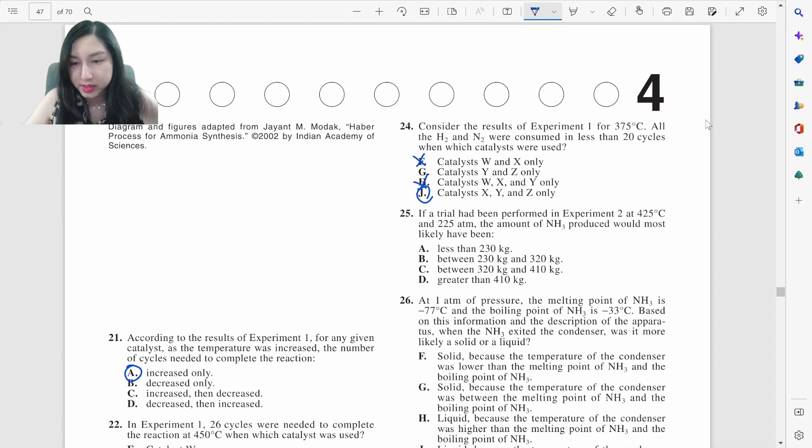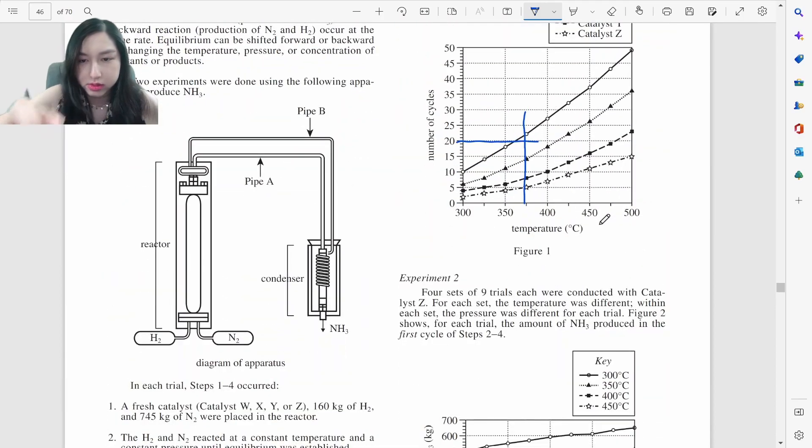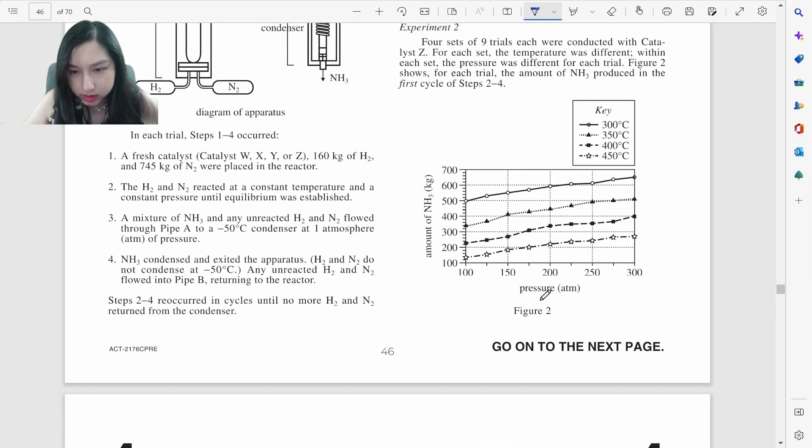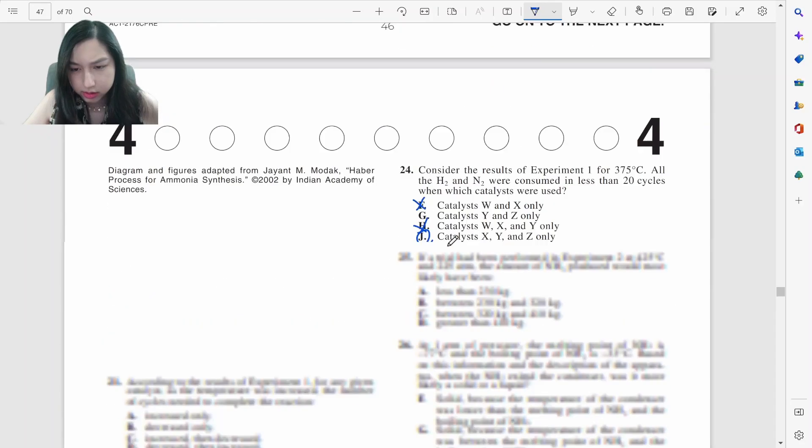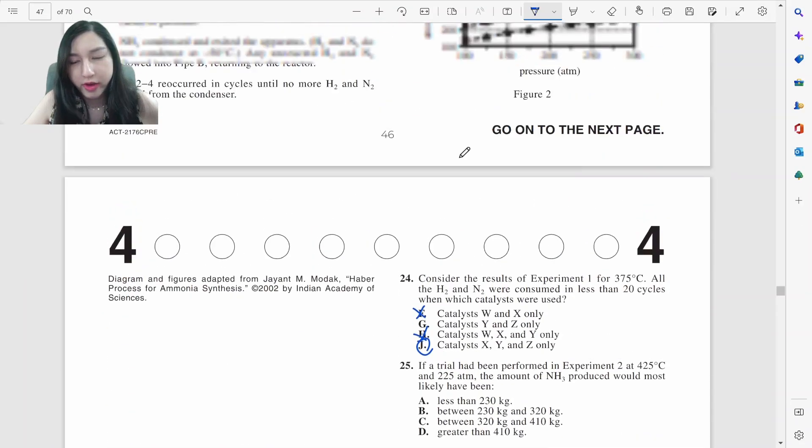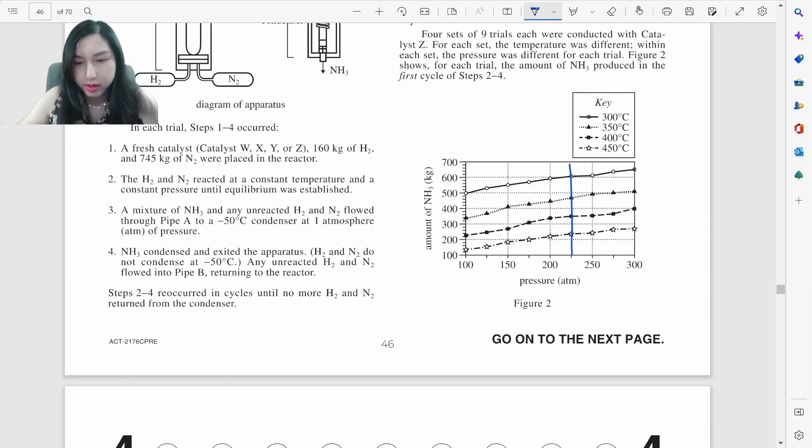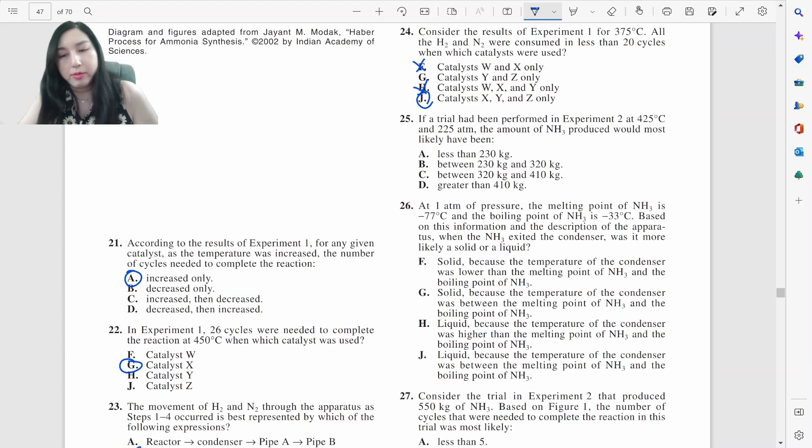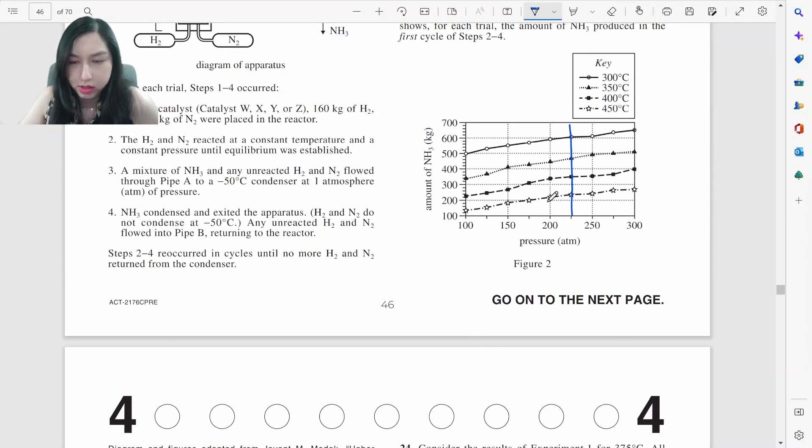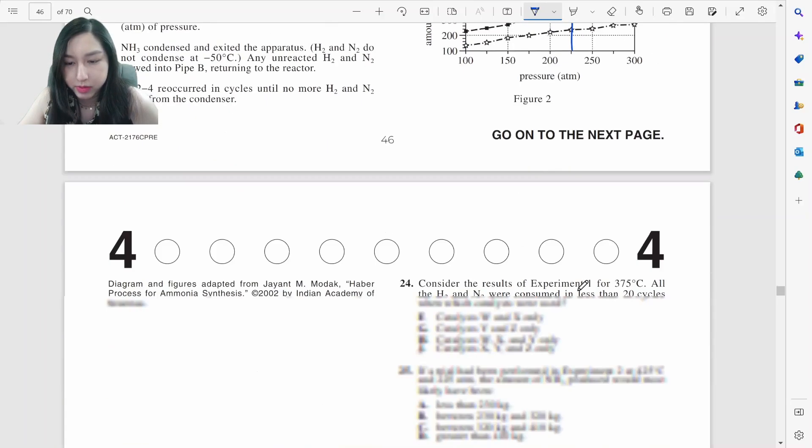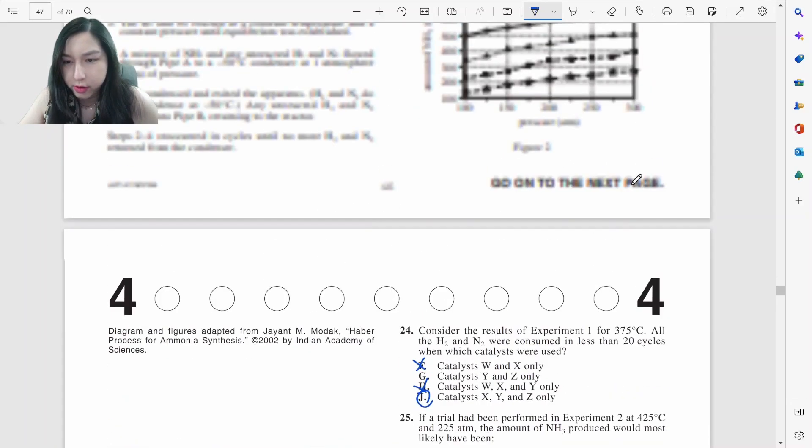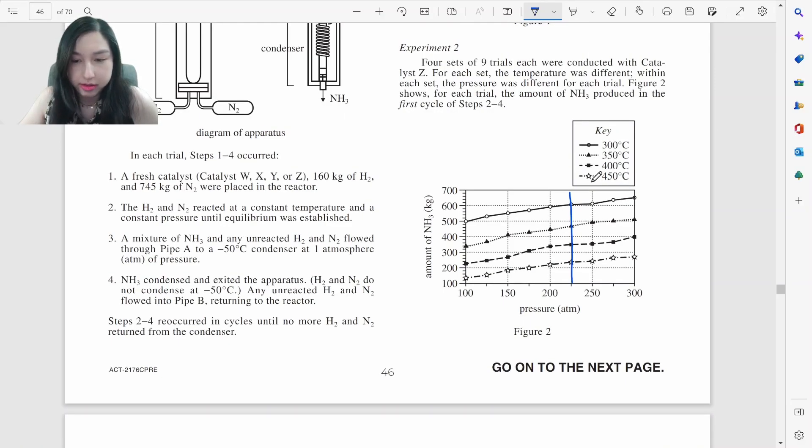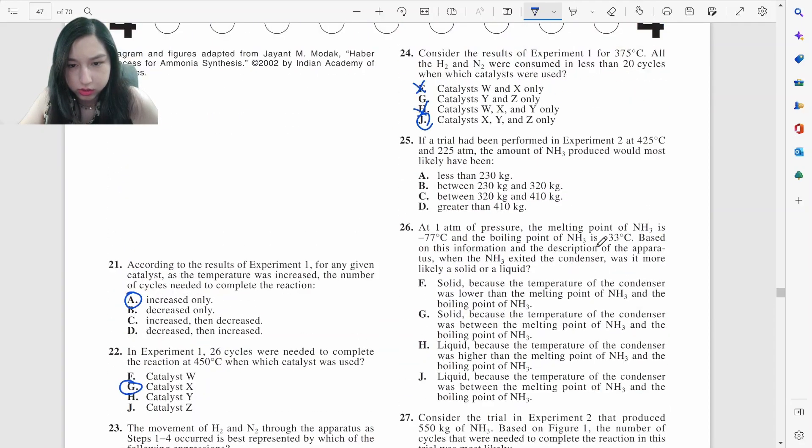If I try to perform in experiment two at 425 degrees Celsius. So let's look at experiment two. I don't see 425. And 225 atm. Then the amount of ammonia produced. But there is no temperature. Oh, the temperature is the key right here. For 425, so we're talking about in between the square and the star, which is 200 something to 300 something. That's B.